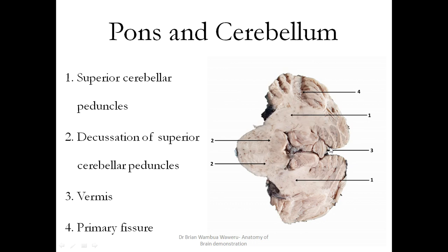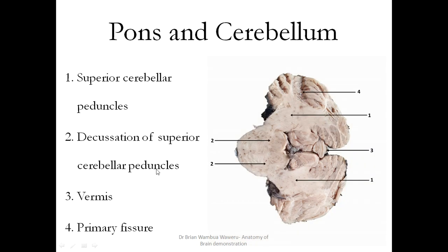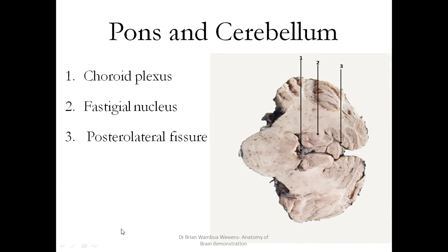This is the vermis of the cerebellum, and here is the primary fissure of the cerebellum. This is the fourth ventricle, and you can appreciate the choroid plexus of the fourth ventricle there. Within this white matter you can see gray matter — this is the fastigial nucleus. Then this is the posterolateral fissure, distinguishing it from the earlier primary fissure.